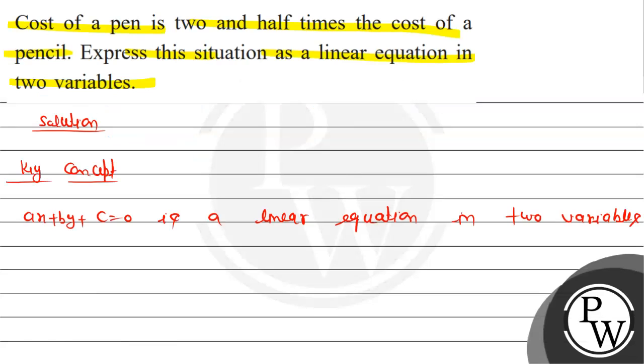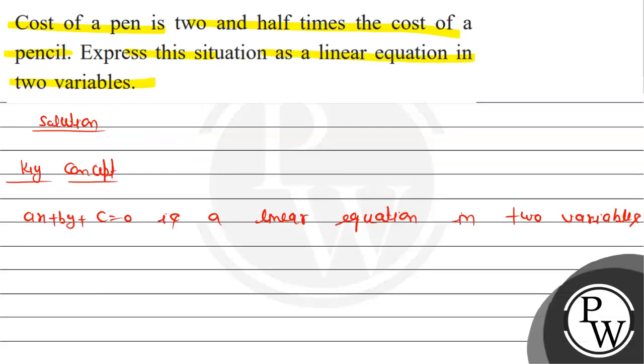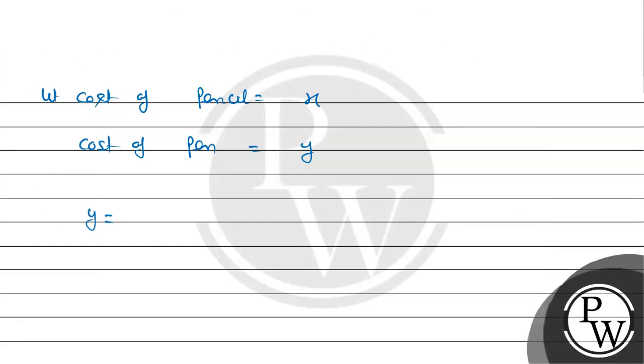For the cost of pen, y equals two and half times the cost of the pencil. So, simplifying, the cost of the pen y equals 5x upon 2.